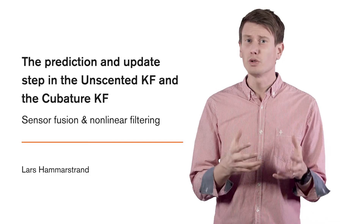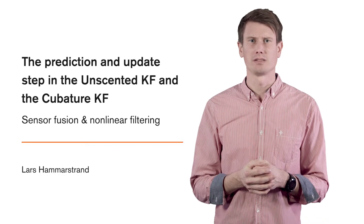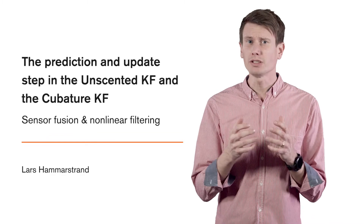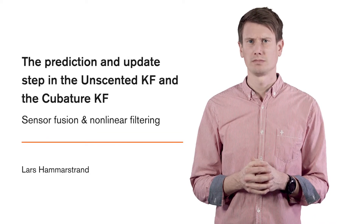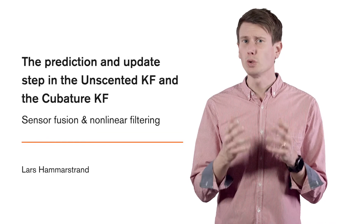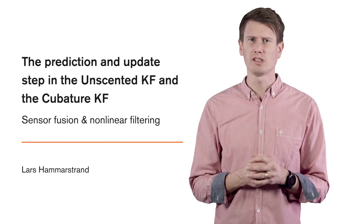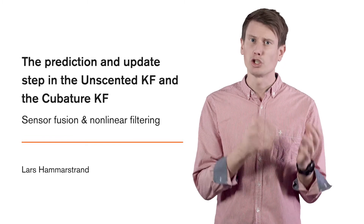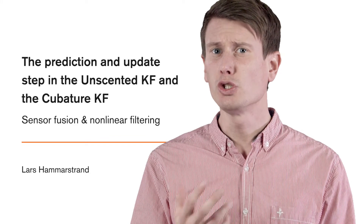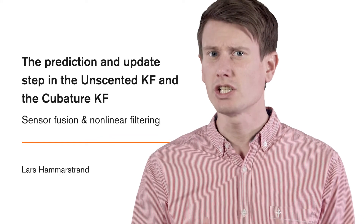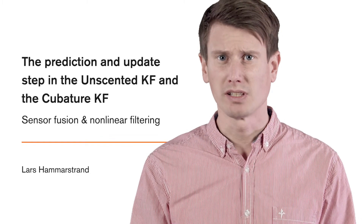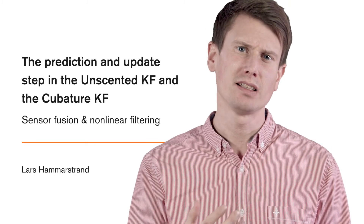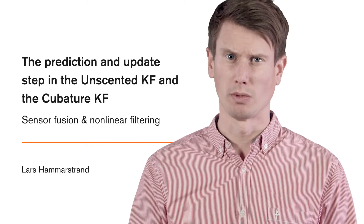It is finally time to put these things together. First, we had one idea, namely to perform filtering by doing moment matching. After that, we developed tools to compute these moments, namely the unscented transform and the cubature rule. Let us now try to use these tools to perform the prediction and update step in a Gaussian filter, and derive the unscented Kalman filter and the cubature Kalman filter.